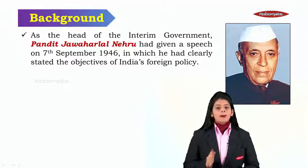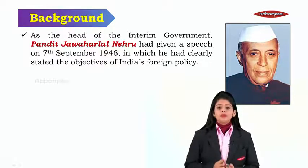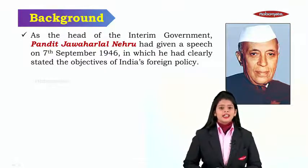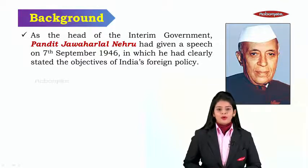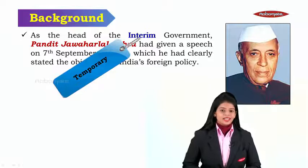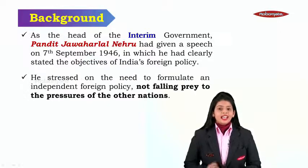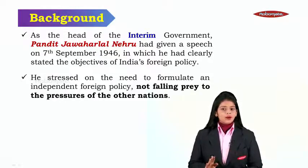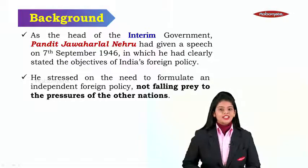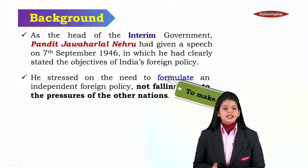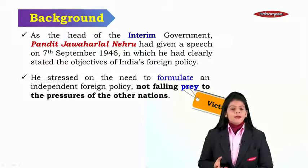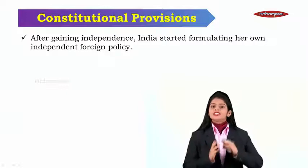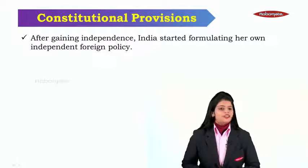As head of the interim government, Pandit Jawaharlal Nehru gave a speech on 7th September 1946 in which he clearly stated the objectives of India's foreign policy. Interim means temporary. He stressed on the need to formulate an independent foreign policy, not falling prey to the pressures of other nations. Here, formulate means to make, and prey means victim.